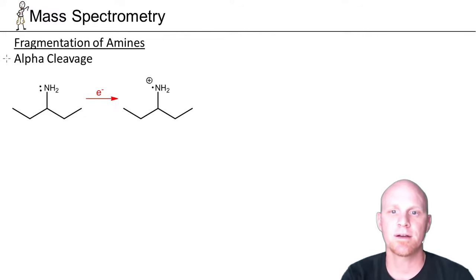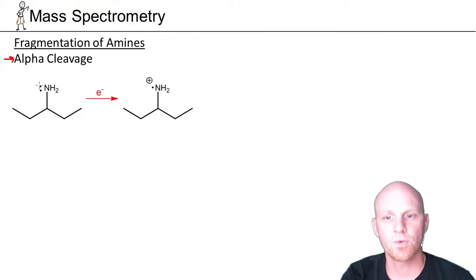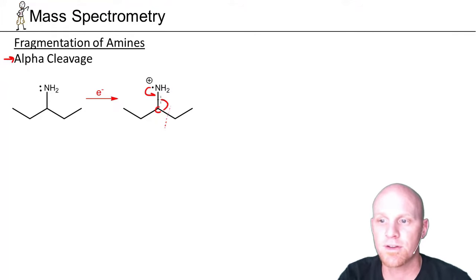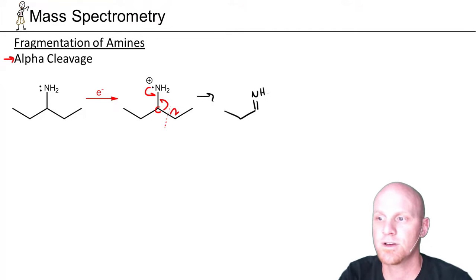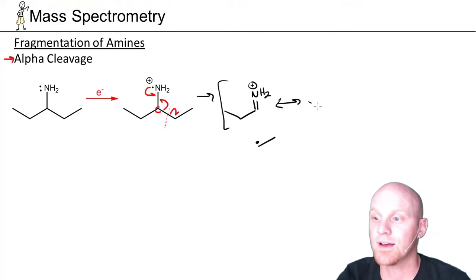Here we'll look at the common fragmentation pattern for amines — it's simply alpha cleavage, similar to what we saw for both alkyl halides and alcohols. With our molecular ion, we lose one of the non-bonding, high-energy electrons, leaving a radical. We form half the double bond and break adjacent to the alpha carbon — on the left or the right, it doesn't really matter. We form the other half of a double bond to nitrogen and break that bond, leaving us with a carbon-nitrogen double bond with a positive charge, and a two-carbon radical. The positive charge is shared between the nitrogen and the carbon — a resonance-stabilized cation.